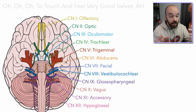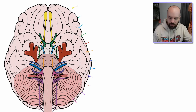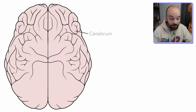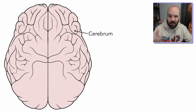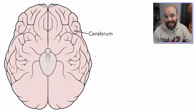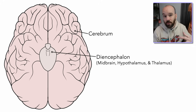Before we get into all of those nerves, we're going to take a look at the parts of the brain that we need to know for this video so we can talk about the nerves a little bit better. First, we have the cerebrum, which includes the lobes of the brain like the frontal lobe and occipital lobe. We've got the diencephalon, which is the structure that includes the midbrain, the hypothalamus, and the thalamus.